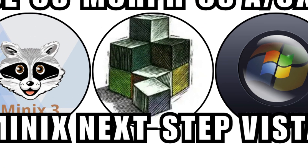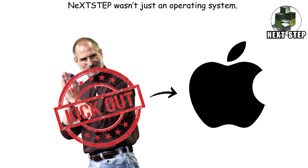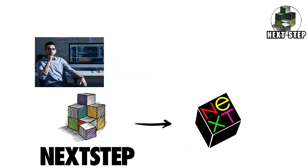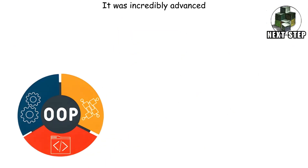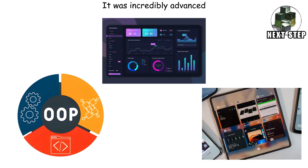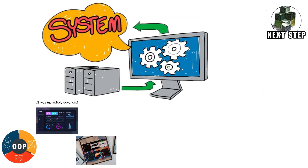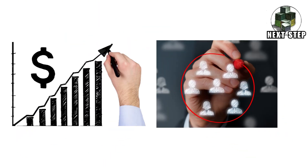NeXTSTEP wasn't just an operating system — it was a resurrection plan. Built by Steve Jobs after he was kicked out of Apple, NeXTSTEP ran on NeXT Computers and focused on developers, universities, and high-end users. It was incredibly advanced: true object-oriented programming, a modern graphical interface, powerful multitasking, and tools that made existing systems look prehistoric. It was also wildly expensive and targeted at a very small audience.